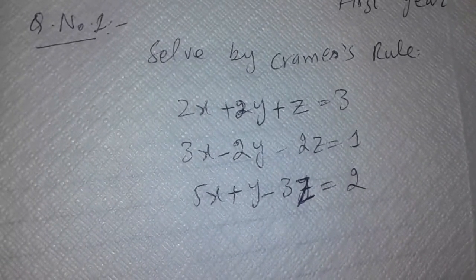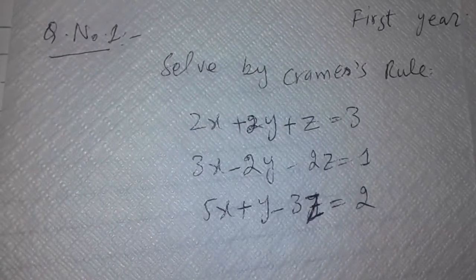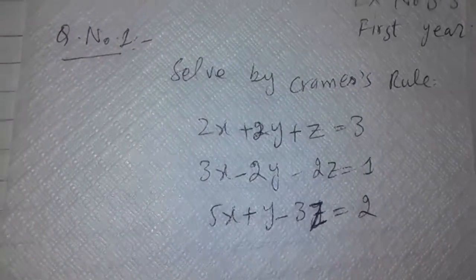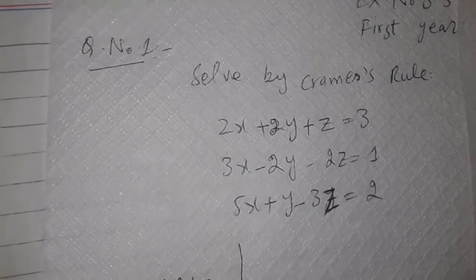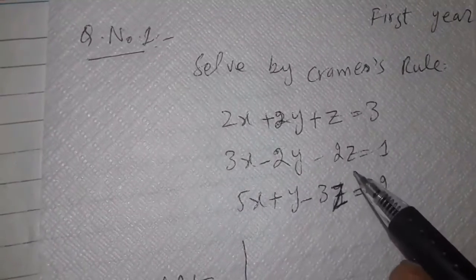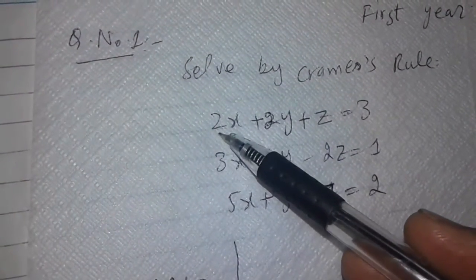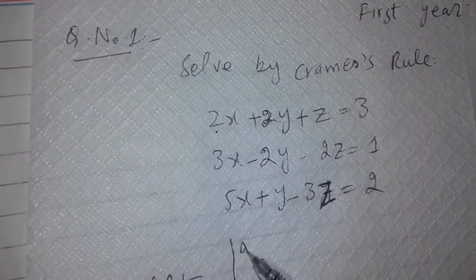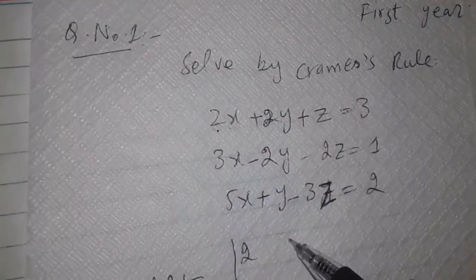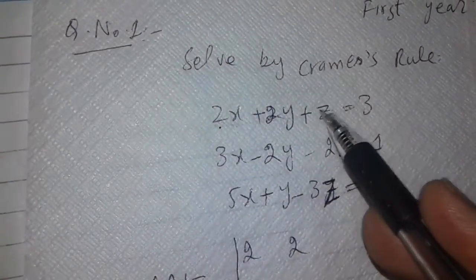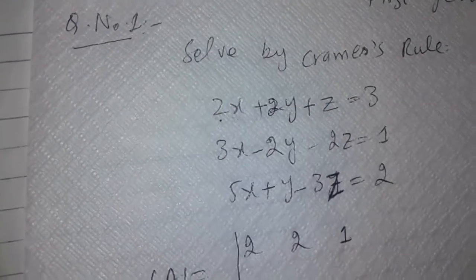To solve the system by Kramer's rule, first of all we have to find the determinant of all of these equations. We will take the determinant of all the constants on the left-hand side. For the first equation, the constants are 2 for x, plus 2 for y, and 1 for z.